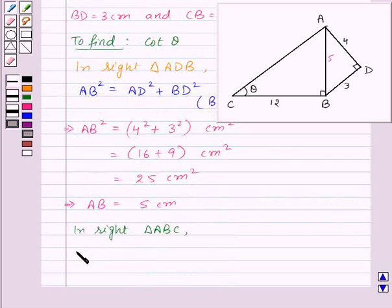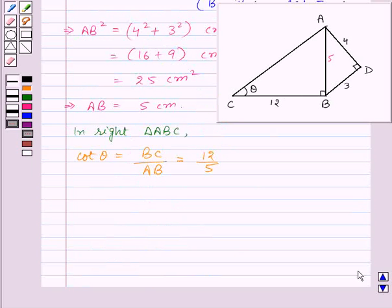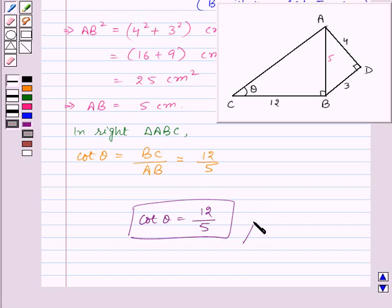So that means here cot theta will be equal to 12 upon 5. Thus cot theta is equal to 12 upon 5 is the required answer to this question.